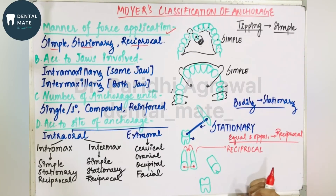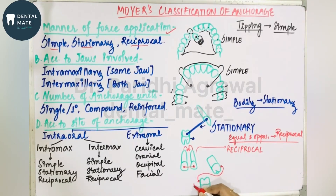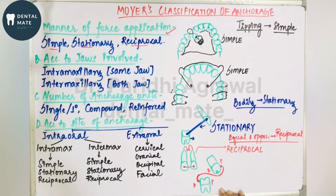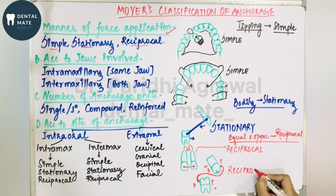Another example of reciprocal anchorage is crossbite elastics. In a crossbite situation, the mandibular tooth is totally lingually placed and the maxillary tooth is palatally placed. Using crossbite elastics, the maxillary tooth moves buccally and the mandibular tooth moves, and both come into occlusion. Both teeth move equally and oppositely — this is also an example of reciprocal anchorage.